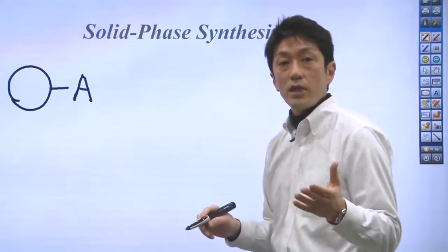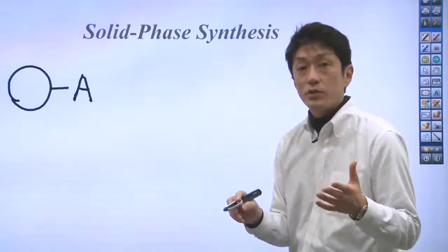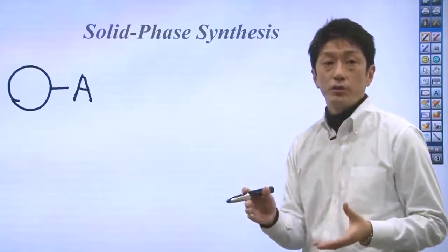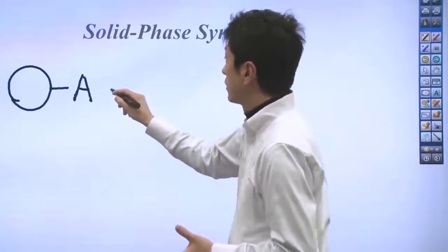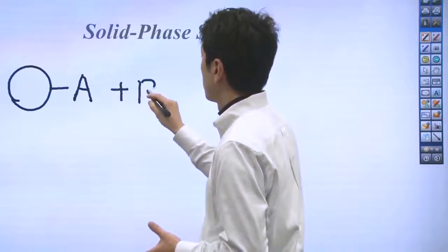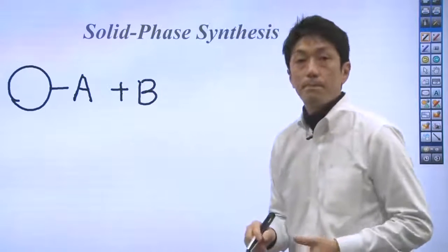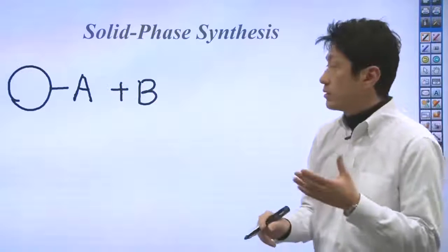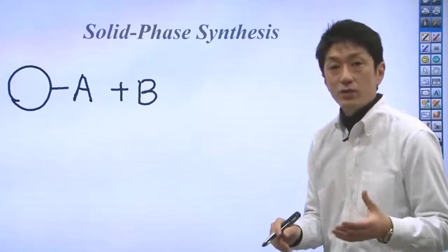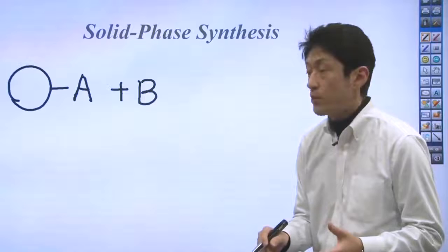Then the size of A becomes thousands of times larger than that of B. Then this size difference allows us to distinguish A from B.